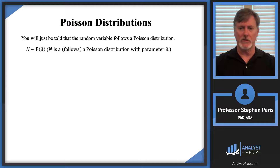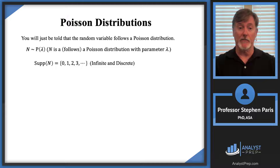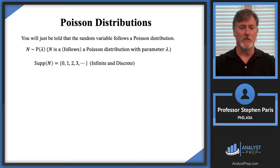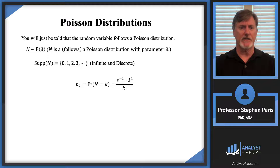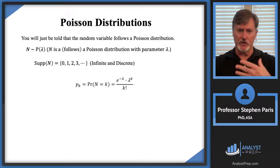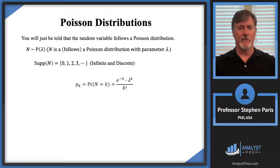The support of this distribution is {0, 1, 2, 3, ...} — like the geometric or negative binomial distribution, it's a discrete set with an infinite number of values, so it's infinite and discrete. For probabilities, the formula is p_k = e^(−λ) · λ^k / k!, where lambda is the parameter you'll be given or need to calculate. You should commit this formula to memory — it's a very often-tested distribution on exams.